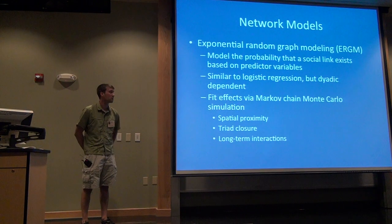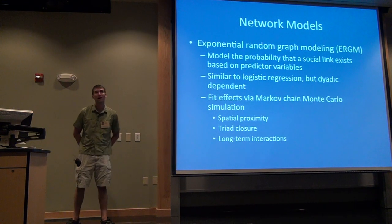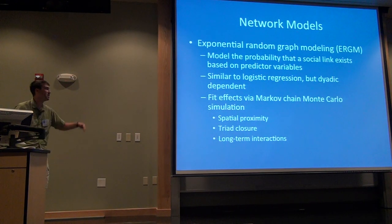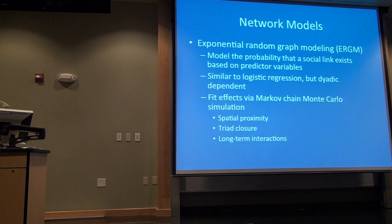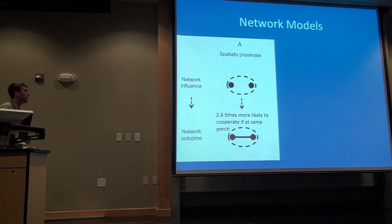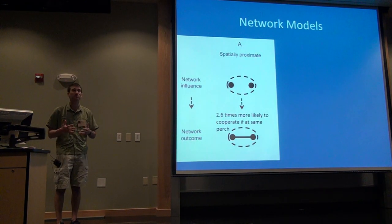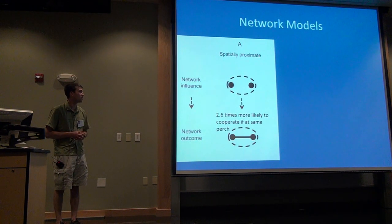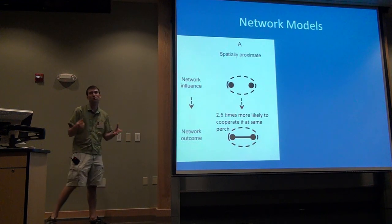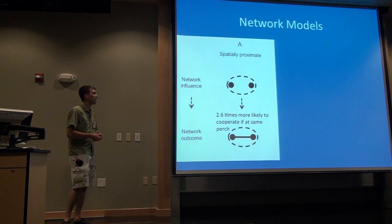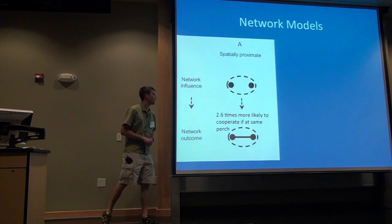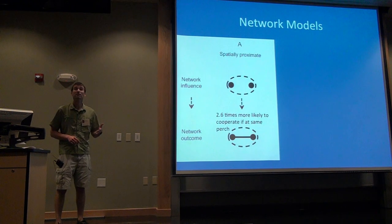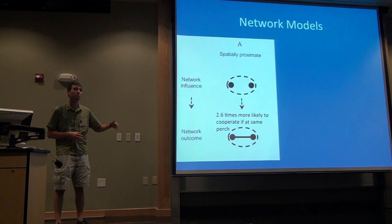I looked at different combinations of effects to see which combination best fit our eight networks. What I found was that for all eight networks, across all 16 years, three effects together were the best model: spatial proximity — how close were males located — triad closure, and long-term interactions — did a male interact with another male in a previous two-year time period? Looking at the effect of spatial proximity first: males were on average over two and a half times more likely to cooperate if they were at the same perch zone than if they were farther away.